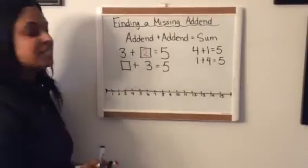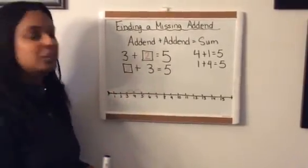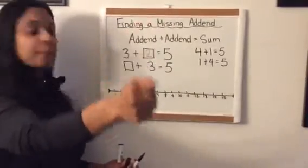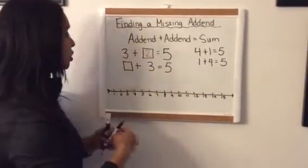So even though it's the first number that's missing this time, all we have to do is grab the addend that we know in our hand, three, and then punch out four or five and we'll get two again.